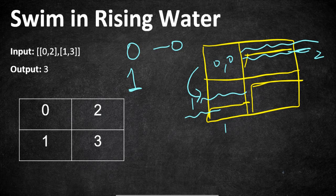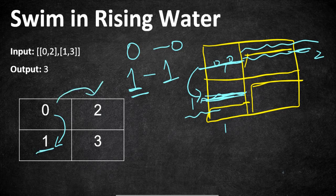At time 1, the water level is 1 at both (0,0) and (1,1), so you can swim from (0,0) to (1,1) since the elevation is covered by water. However, you cannot travel to the other two cells because the water level is 1 but their elevation is 2, meaning there is land above the water level. So in that case you cannot swim — you still have to wait until the water reaches the level of that land.